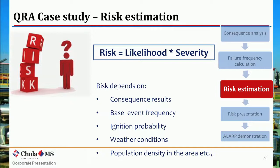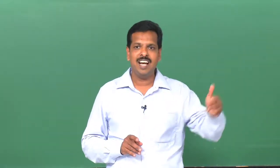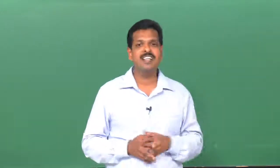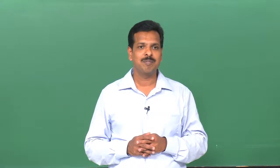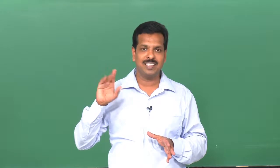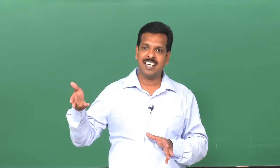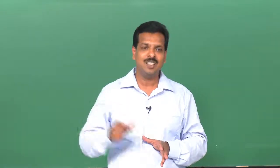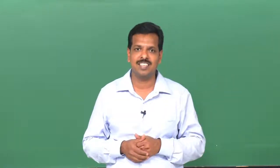Risk depends on consequence results, base event frequency, ignition probability, weather conditions, and population density. Till now, whatever we have discussed is the estimation of frequency and estimation of the effects or consequence. But the last element — population — we have not discussed. That is the car example: crashing a car against someone, how many people get impacted — so the number of people factor has to be factored into our calculations.